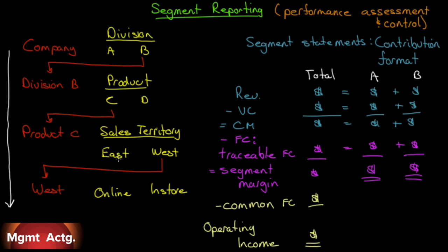What is segment reporting? Segment reporting is done in contribution format. We create statements for each segment in a contribution format. It basically follows the contribution format we're familiar with, except when we get to the fixed costs. We start with revenue — let's say we're doing the company and Division A and B. The revenue for the company as a whole is the sum of Division A and Division B revenue. Minus the variable costs — the total variable costs are the sum of the variable costs for Division A and Division B. Revenues minus variable costs equal our contribution margin.